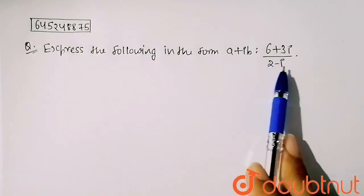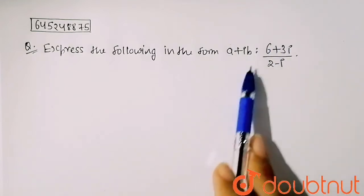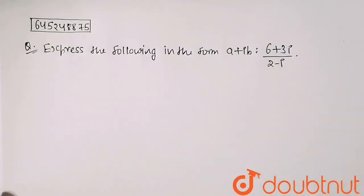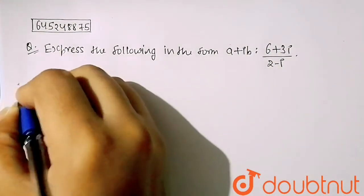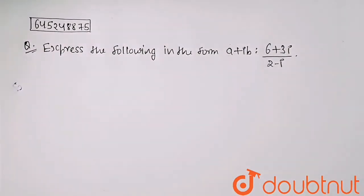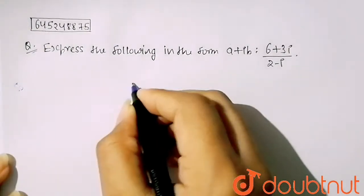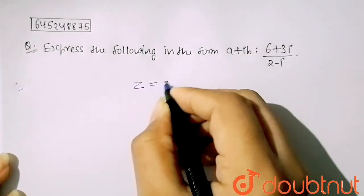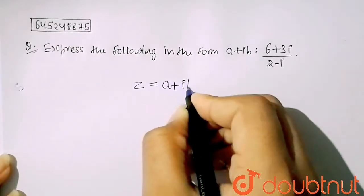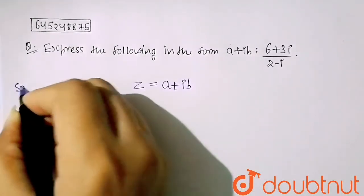You have to express this term in the form of a plus iota b. So here, let's say that my z equals a plus iota b. This only we have to solve here.